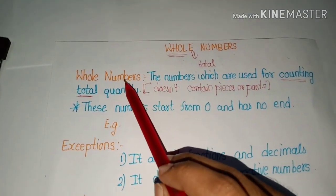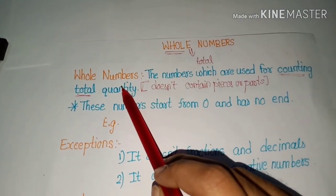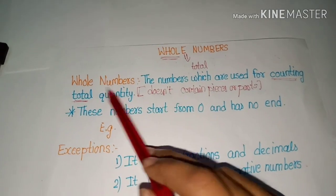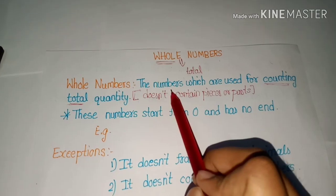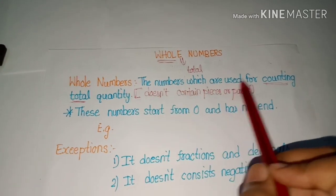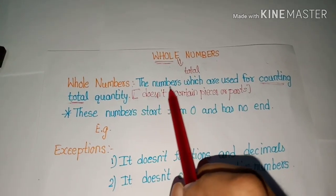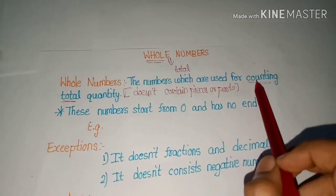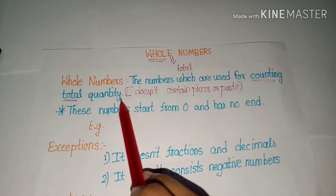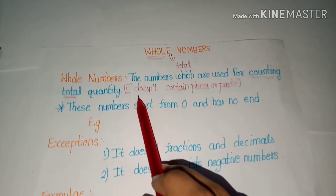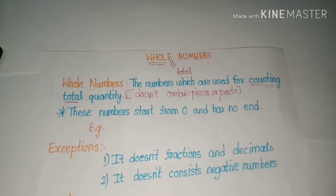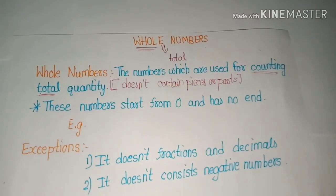Now let's go into the definition. Whole numbers are the numbers which are used for counting total quantity.